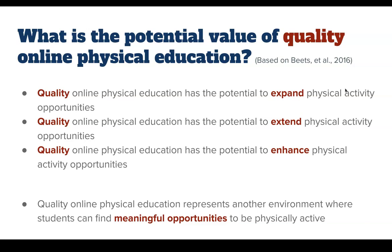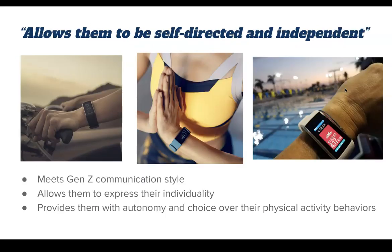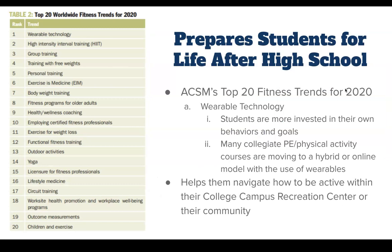Quality online physical education represents another environment where students can find meaningful opportunities to be physically active. It doesn't need to take the place of face-to-face PE — in the future, when we get back, we can still maintain an online environment if that suits students' needs. It allows for self-directed and independent learning, meets the communication style of students today, and allows them to express their individuality. It also can prepare students for life after high school. Wearable technology is the number one trend, and a lot of the accountability is through wearable technology within an online environment, helping students navigate being active in high school and beyond.